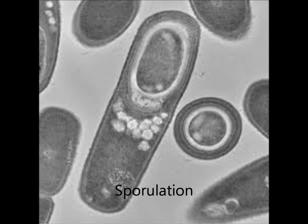When Bacillus is experiencing favorable conditions, it undergoes the vegetative life cycle. The cell will continuously elongate, replicate its DNA, and divide by binary fission.